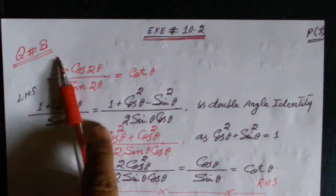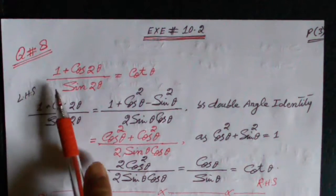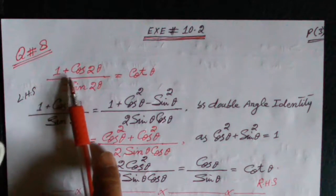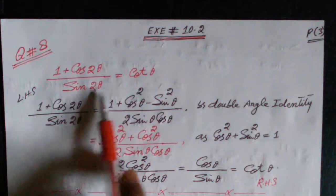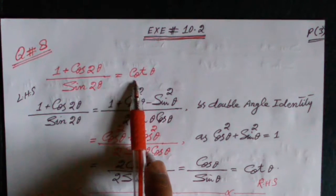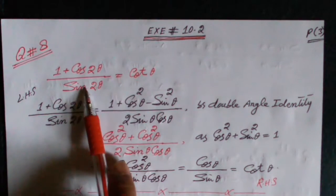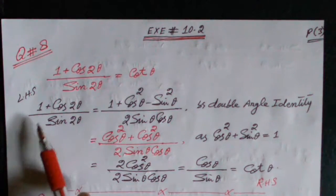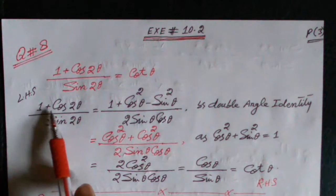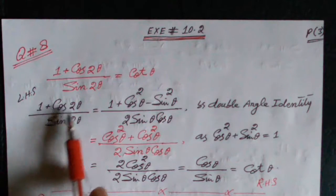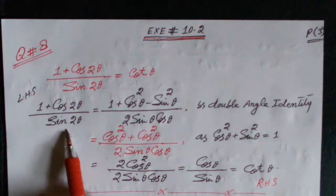Exercise 10.2, question number 8. The question is: 1 plus cos 2θ divided by sin 2θ is equal to cotangent θ. The left-hand side of this identity is 1 plus cos 2θ divided by sin 2θ.